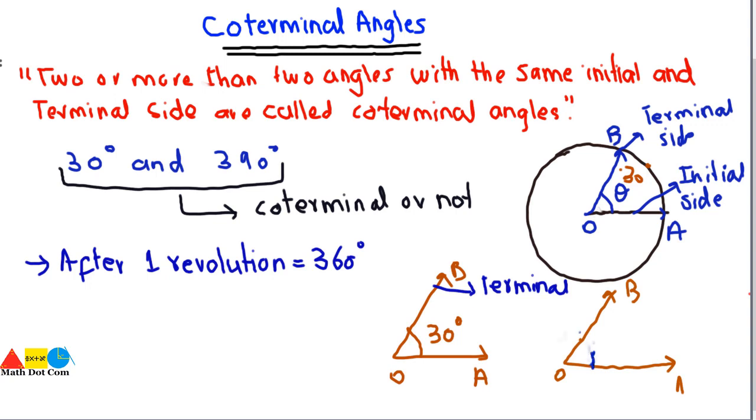As we know that one complete revolution equals 360 degrees, so I have to make one complete revolution. Here it comes 360 degrees. But what I have to draw? I have to draw 390 degrees, because I have to determine whether 390 is coterminal with 30 or not. So from here I have to move 30 degrees more to make it 390.